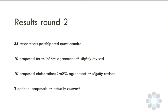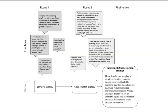The two other items we had revised did turn out to be actually relevant and were added to the form in their revised version. So the final form consists of 13 items. To briefly show what this looks like: in round one, we presented a suggested term called 'sampling strategy arguments,' and after revisions based on panel feedback, we arrived at 'case selection strategy,' and ultimately at 'sampling and case selection strategy' with a brief elaboration.